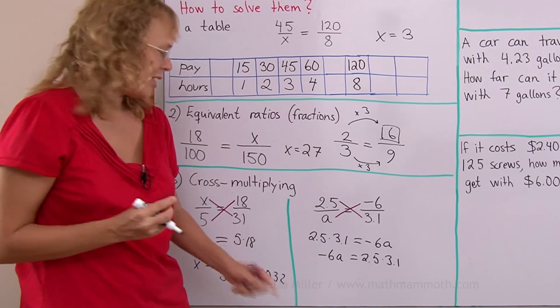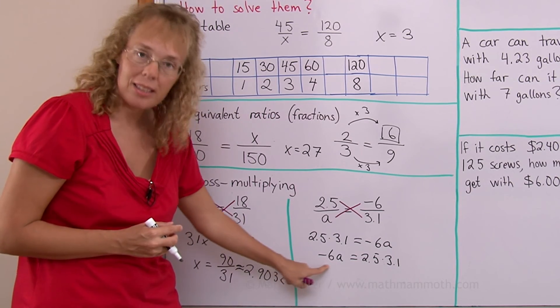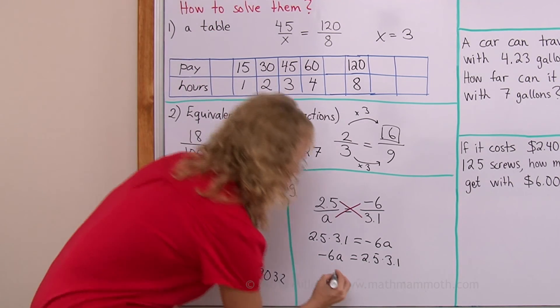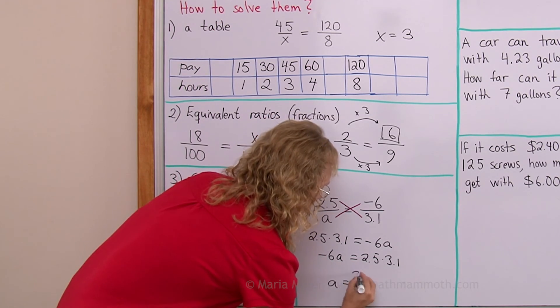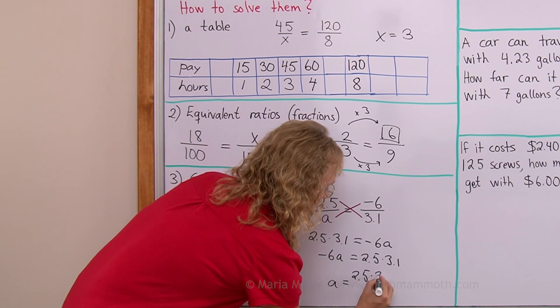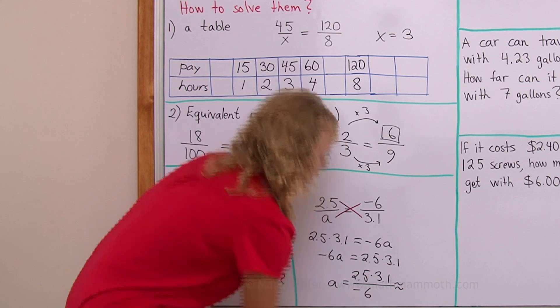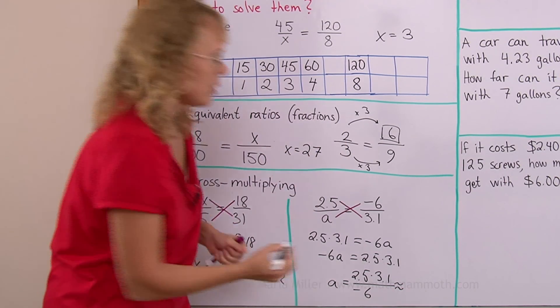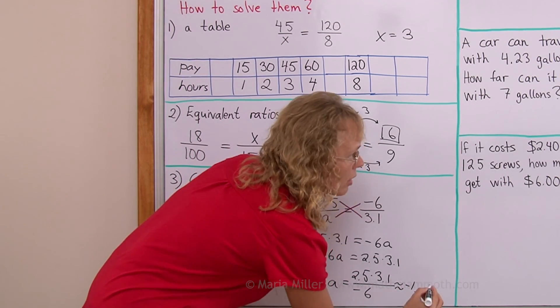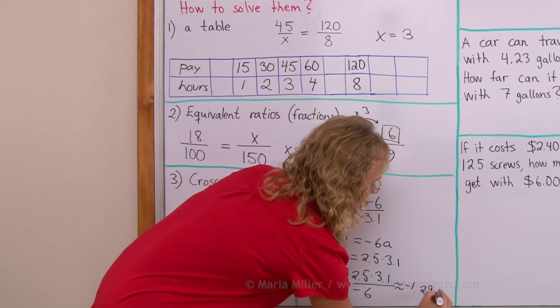But then at this point, you need to then divide both sides by this number, by negative 6. So we get a equals 2.5 times 3.1 divided by negative 6. And then that is about minus 1.292.